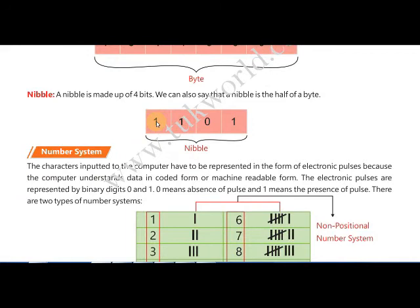The next term is nibble. A nibble is a group of four bits — basically a byte is divided into two sections of four bits each, and that section is called a nibble. So a group of four bits is called a nibble. For example, the bit pattern 1101 is a nibble — that means half of a byte, or 50% part of a byte.